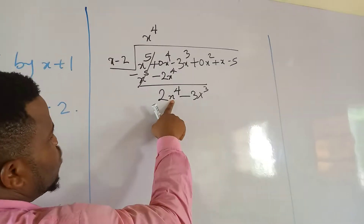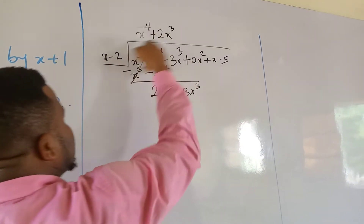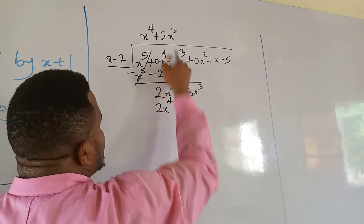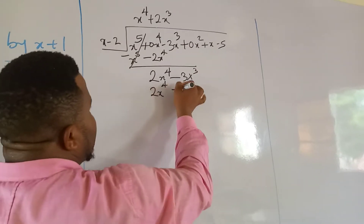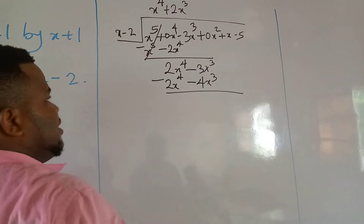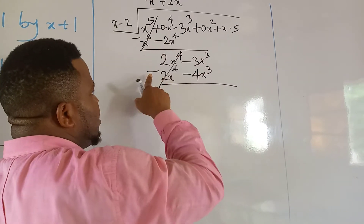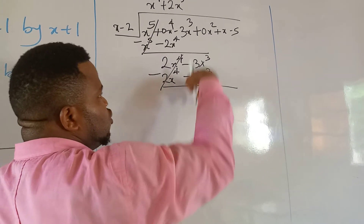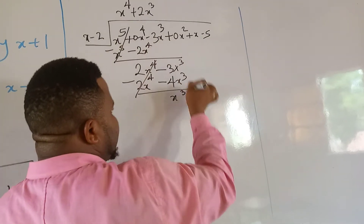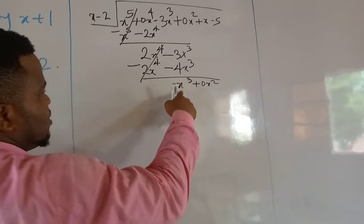x goes into 2x to the 4th giving plus 2x cubed. Then 2x cubed times x is 2x to the 4th, and 2x cubed times negative 2 is minus 4x cubed. We draw a line and introduce minus — 2x to the 4th cancels. Minus times minus 4x cubed is plus 4x cubed, so negative 3 plus 4 gives x cubed. Bring down plus 0x squared.